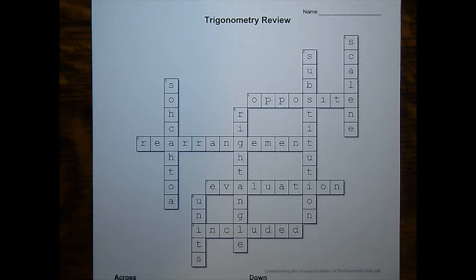First of all, a non-right angle triangle is called a scalene triangle. The first stage of working you need to show is the substitution. The second stage of working you need to show is the rearrangement. The third and final stage is the evaluation.